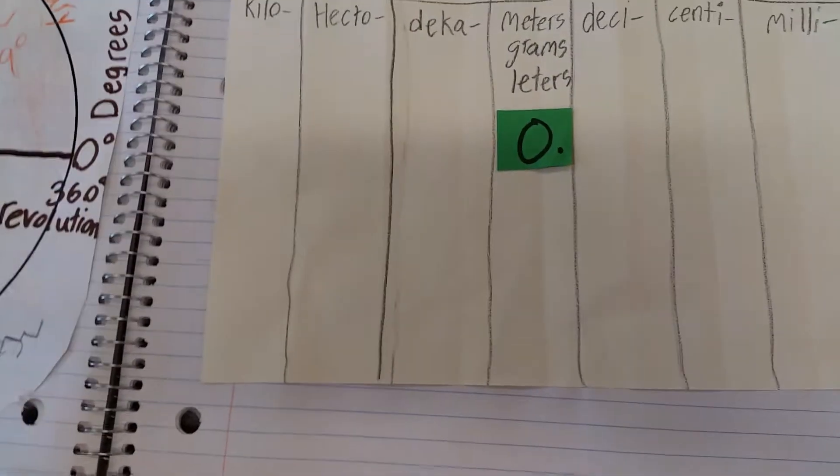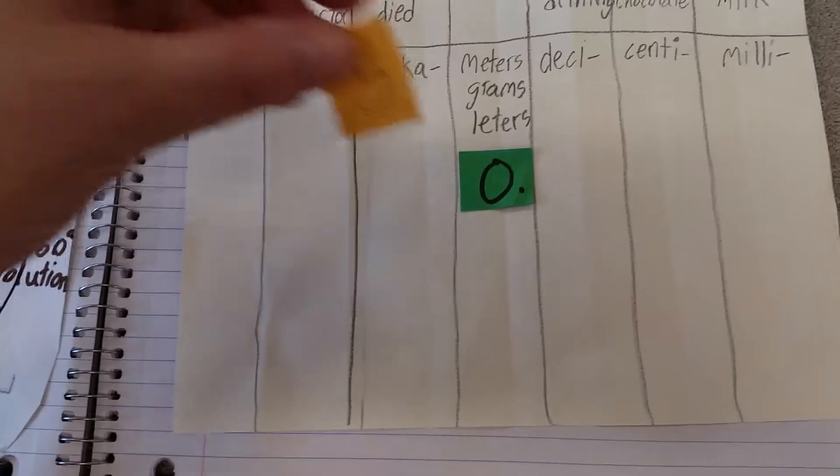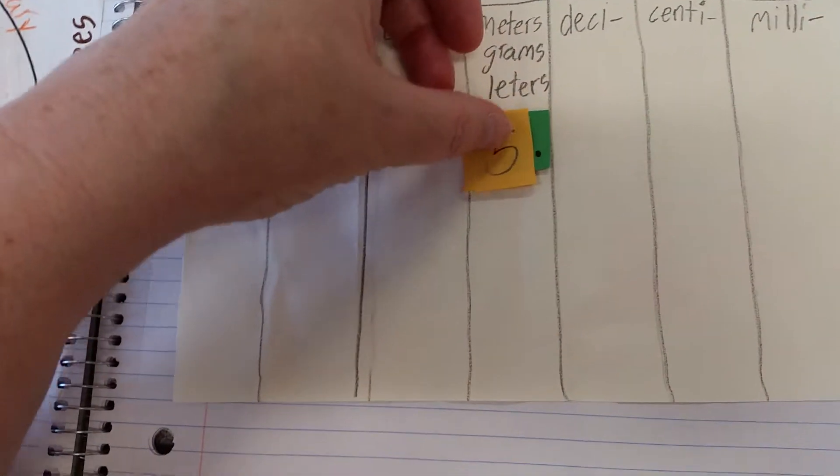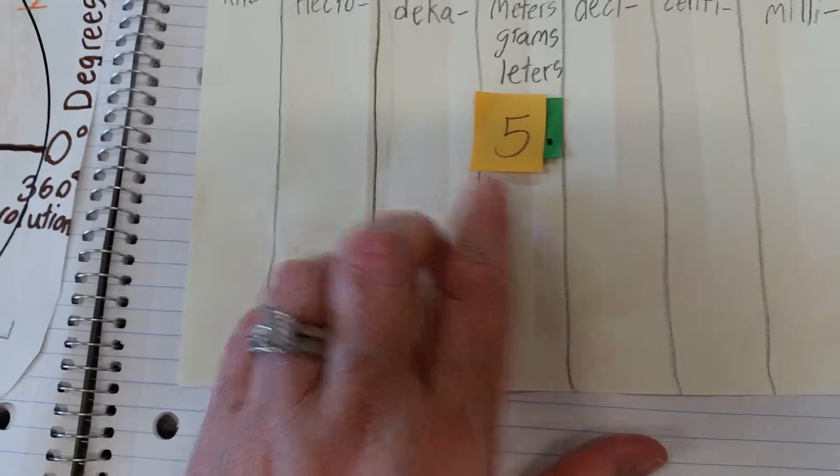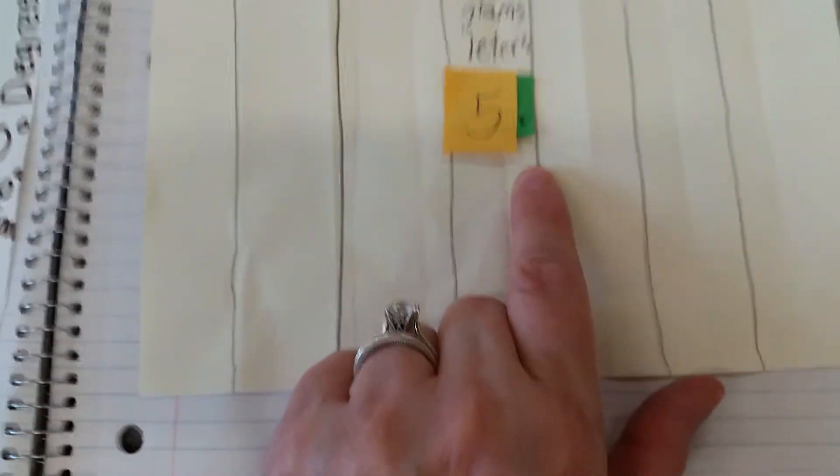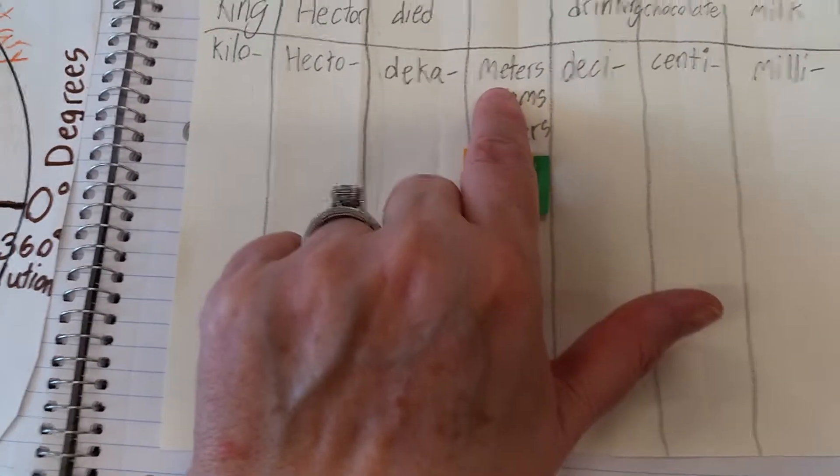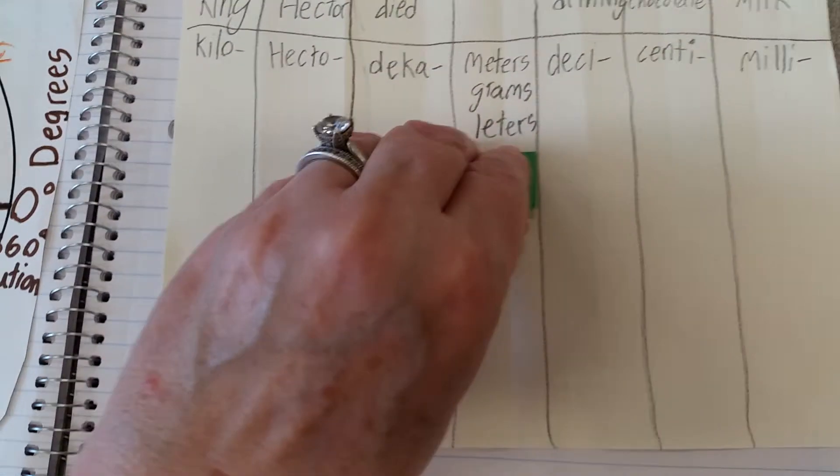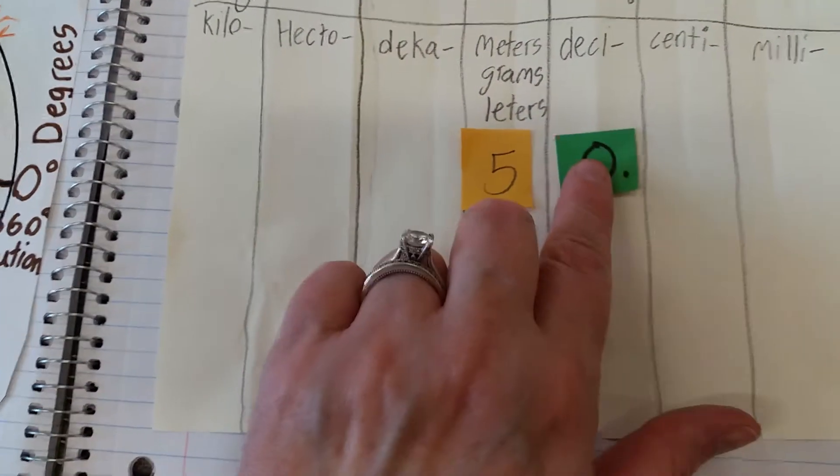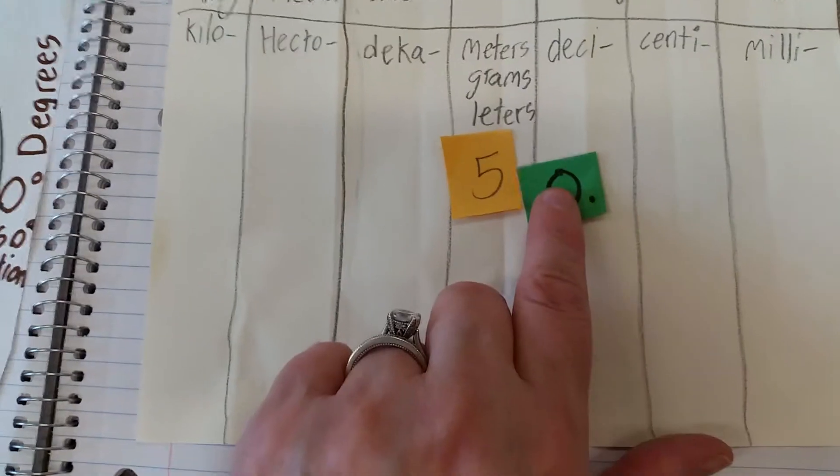Let's say we want to change five meters into millimeters. We place the five right on top of the zero, and notice how it makes the invisible decimal point visible to students. Now we want to turn our meters into millimeters.